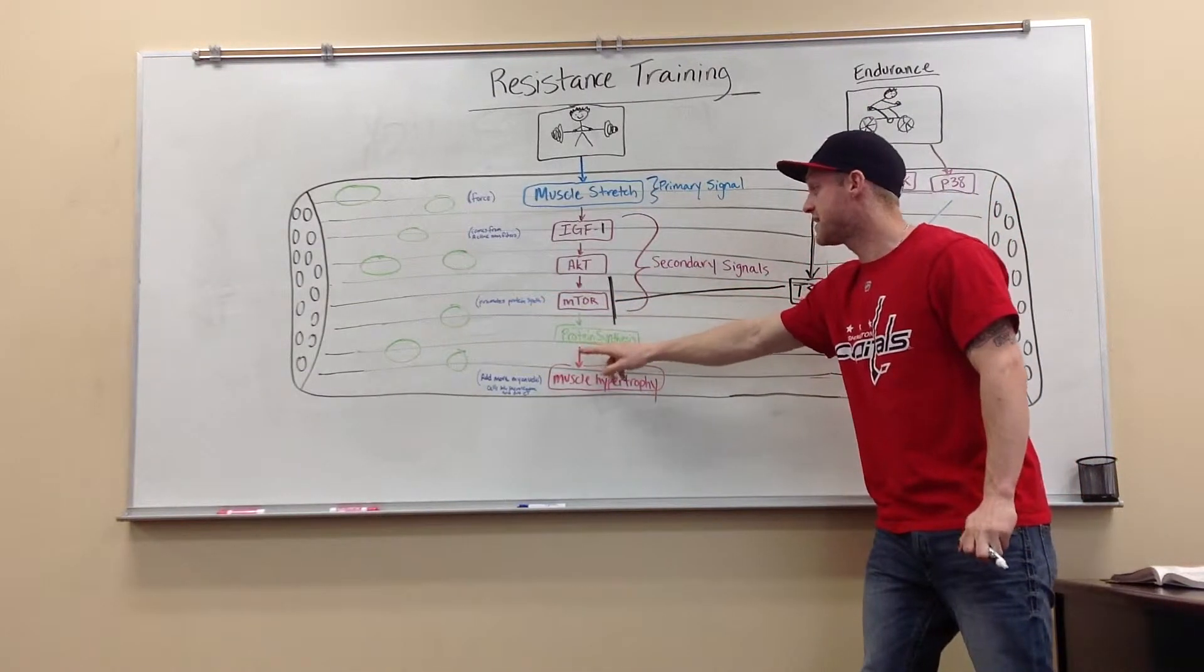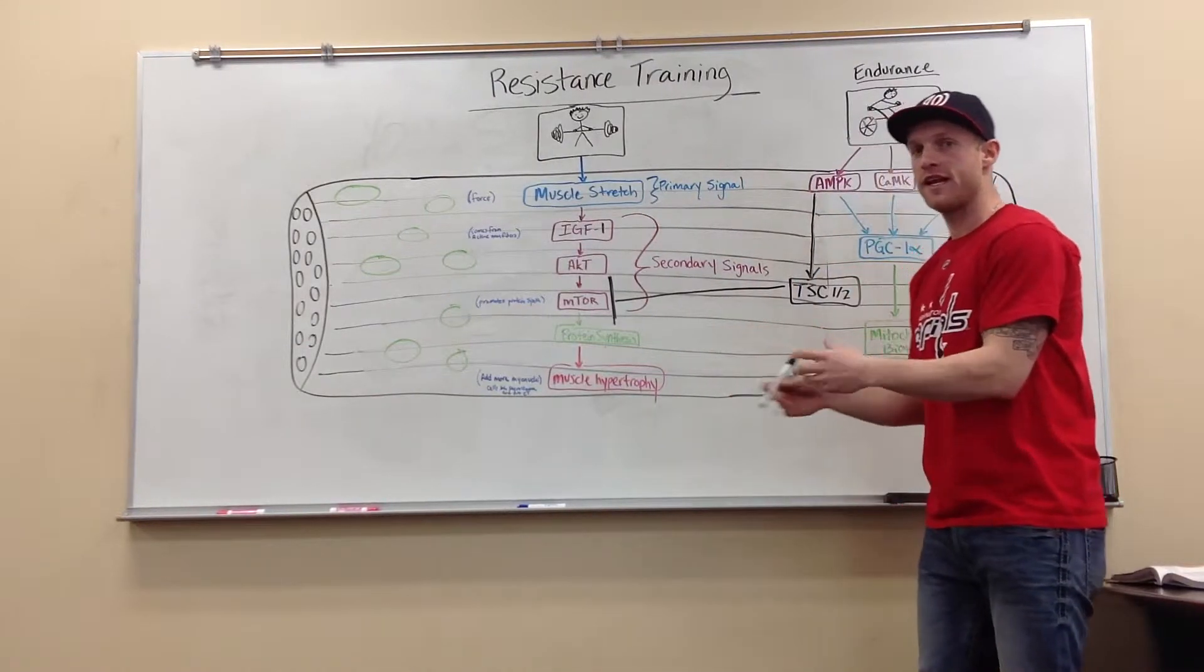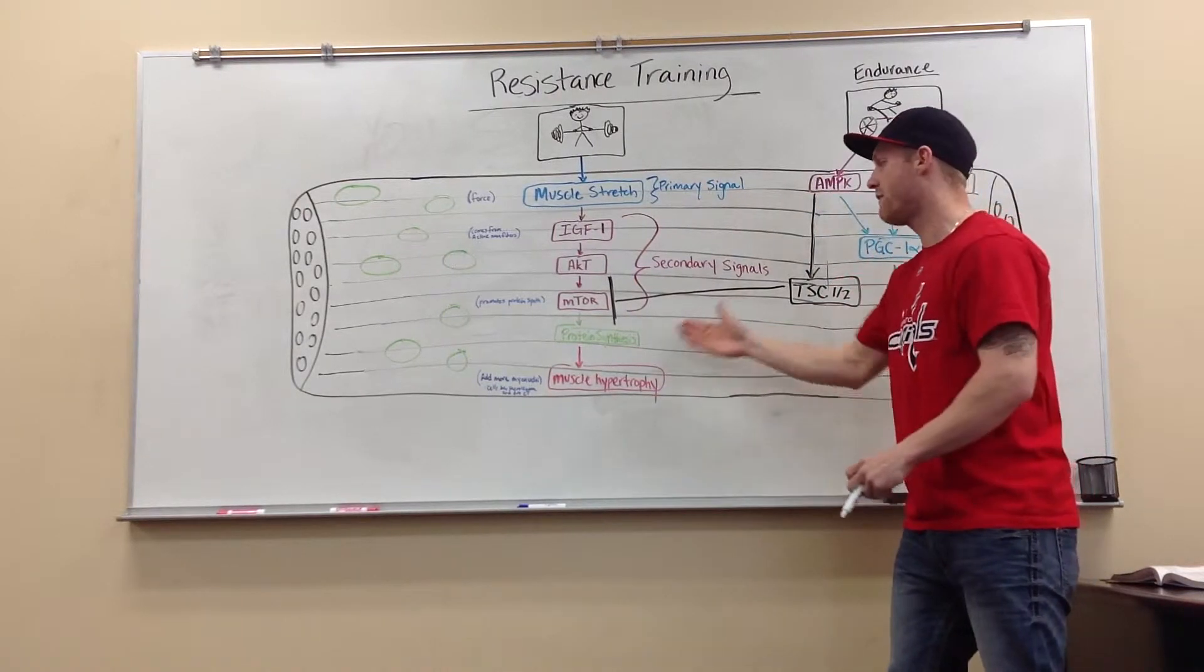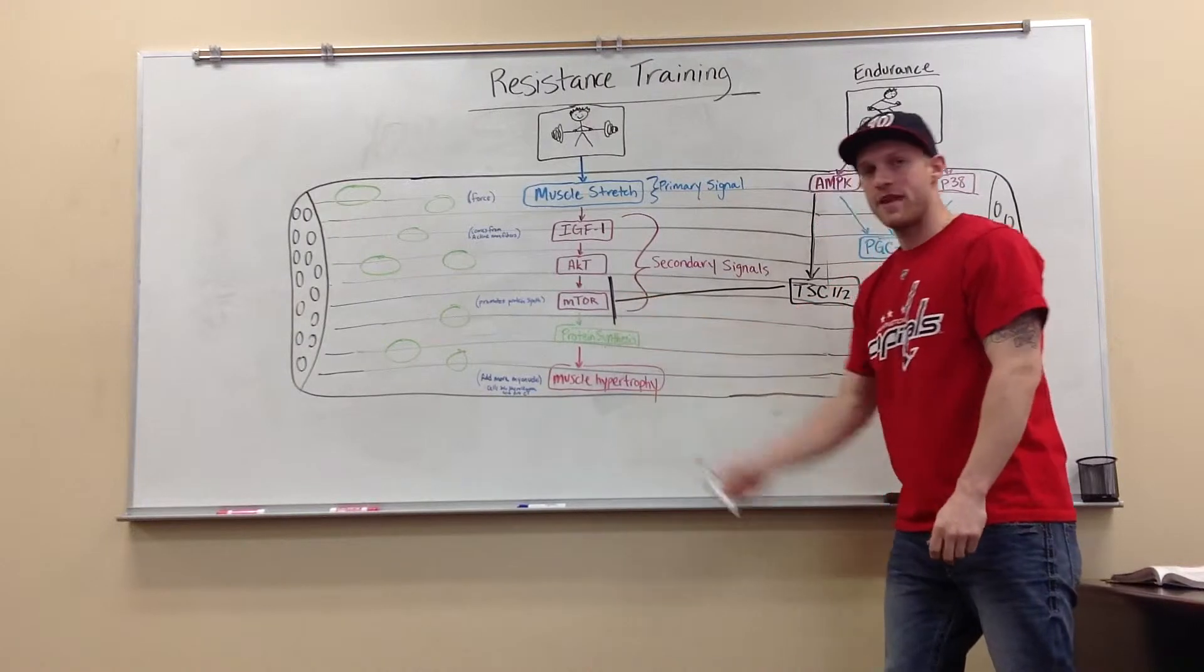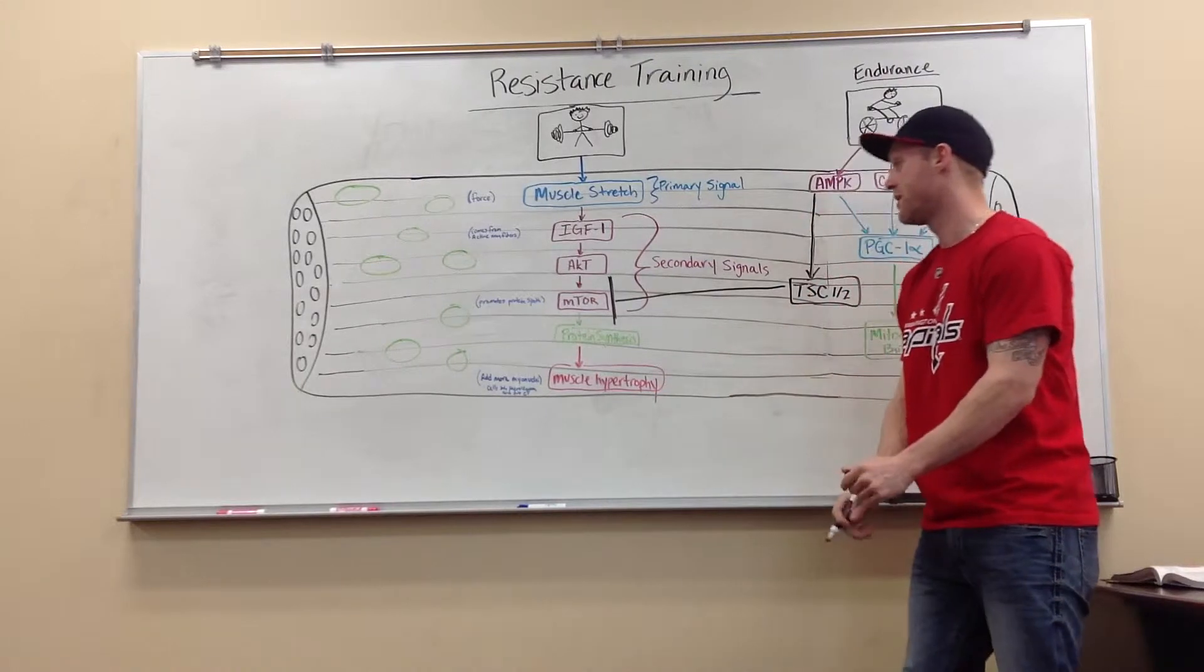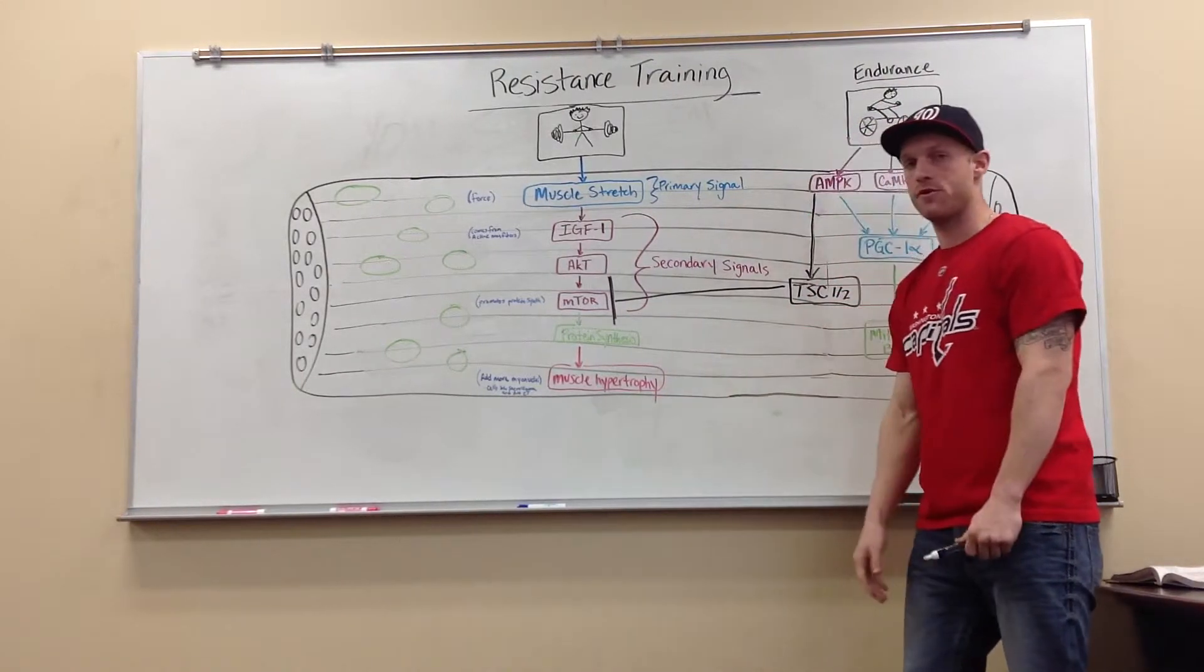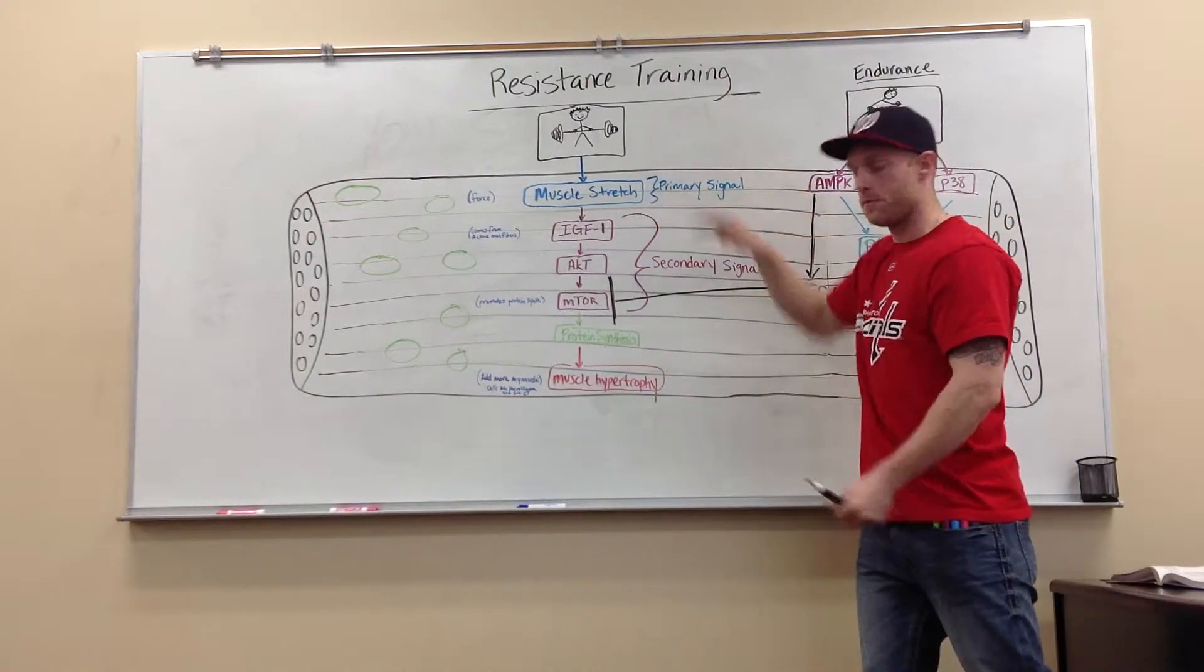is TSC12 inhibits MTOR, which helps promote our protein synthesis. So if we do our resistance training, we might not be able to rebuild our muscles as quickly or our fibers, because we just blocked our enzyme that's needed to stimulate our protein synthesis, which would lead to our muscle hypertrophy. So if we inhibit that, we might not have as much hypertrophy as we would if we did resistance training alone.